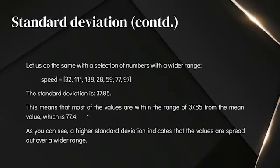This is obviously a list with a wider range than the previous list. As you just saw, a higher standard deviation indicates that the values are spread over a wider range, and a lower standard deviation indicates that the values are centered around the mean, close to the mean.